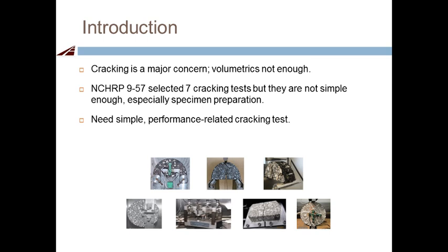About seven years ago, we did the NCHRP I-57 project. Under that project, we selected seven cracking tests: three SCB tests, one DCT test, one bending beam fatigue test, one overlay tester, and one IDT test. The overall finding was that these tests are not simple enough — sample preparation is fairly involved, requiring cutting or coring. When using a cracking test for QC/QA, we want it to be very simple and quick. That's why we needed to develop a simple, performance-related, and repeatable cracking test.